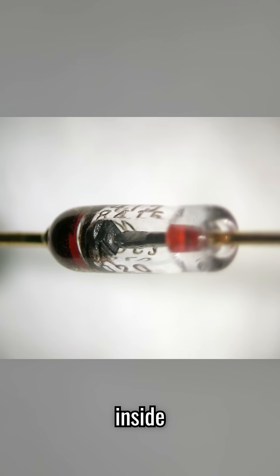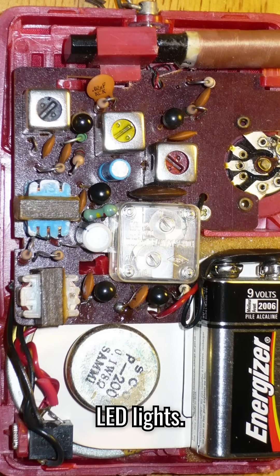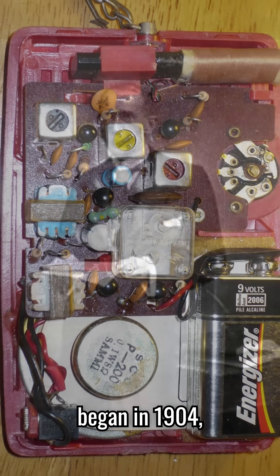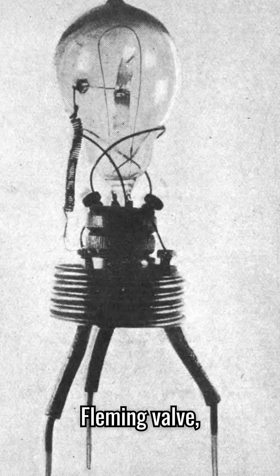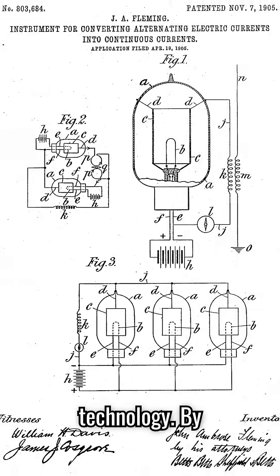This tiny device is inside everything from radios to LED lights. The story of the diode began in 1904, when Sir John Ambrose Fleming invented the first thermionic diode, or Fleming valve, a vacuum tube that revolutionized early radio technology.